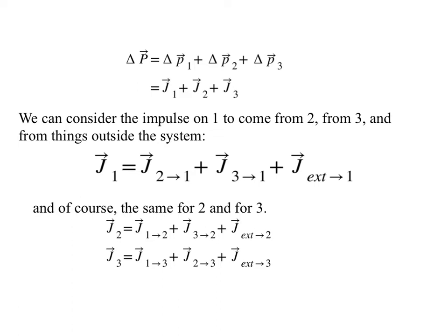Then we can consider the impulse on one to come from either two or from three or from things outside the system, which I said before. The impulse comes from two acting on one, or it comes from three acting on one, or it comes from stuff outside acting on one. And of course, we do the same thing for the other two, just permutating the indices there.